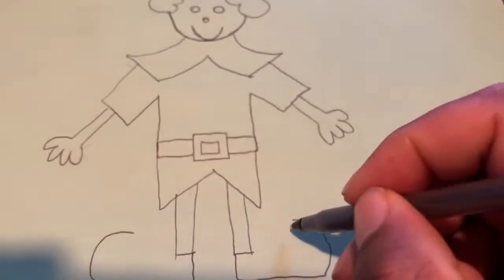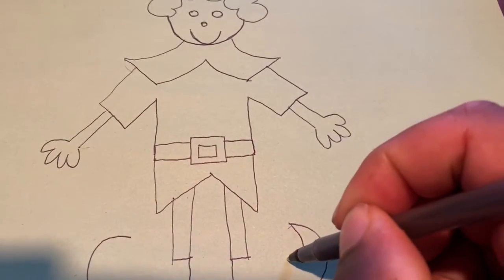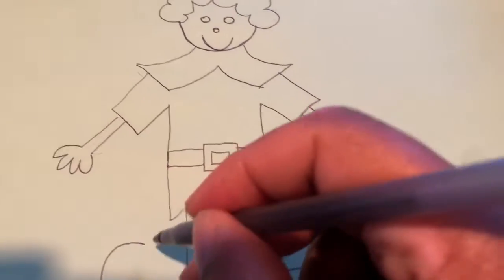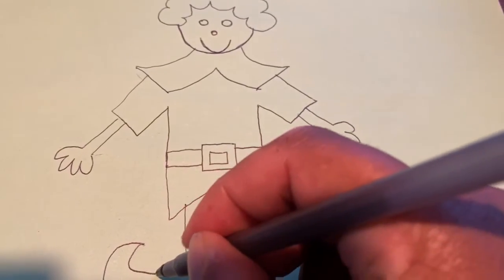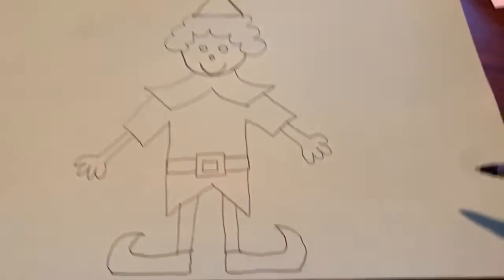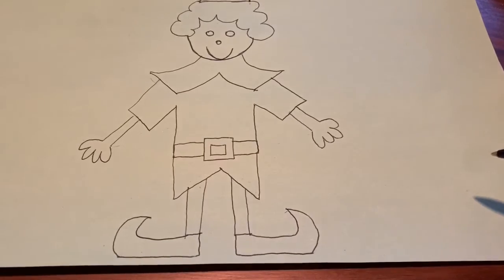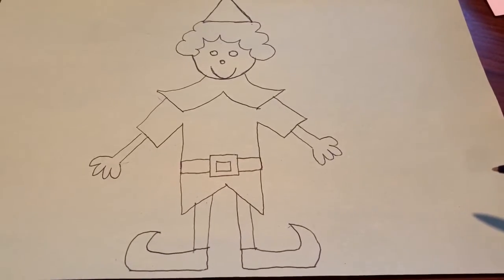And then we'll do a D shape and a C shape. All right. And then those will come back around like this curved line. And this will come back around like this curved line. So he has really big feet. All right. It's pretty cool. We have our elf.